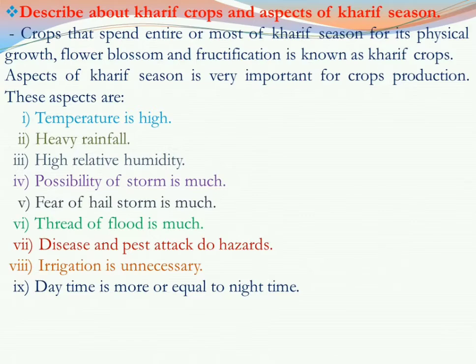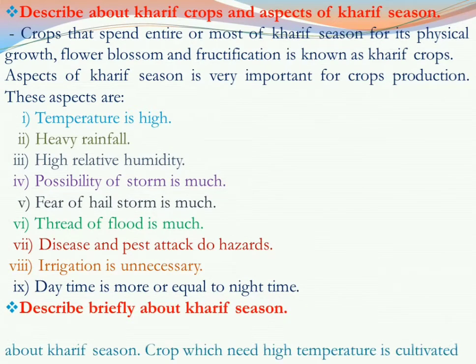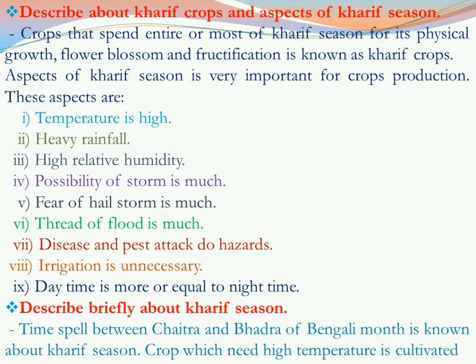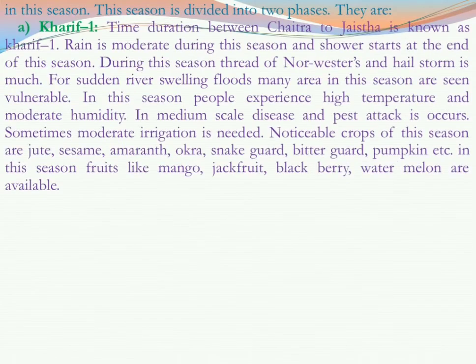The Kharif season is divided into two phases, with a total time duration from Chaitra to Bhadra. This is divided into Kharif 1 and Kharif 2. Kharif 1 covers the time duration from Chaitra to Jaishta. During this time it is actually high temperature — that means hot season.